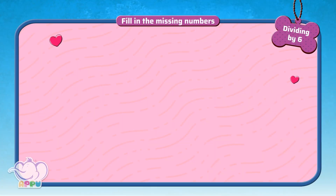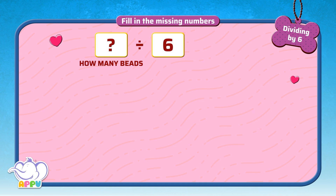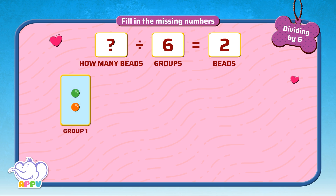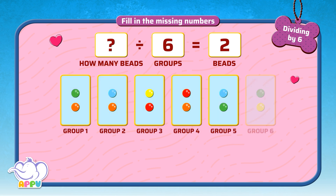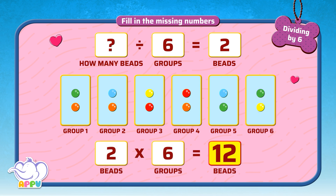Fill in the missing number. Let's take beads as an example. How many beads, when divided into 6 groups, gives us 2 beads? We know that 2 beads in 6 groups equals 12. We use multiplication that we learnt earlier: 2 times 6 equals 12. So the answer is 12. 12 divided by 6 equals 2. We write it as 12 by 6 equals 2.